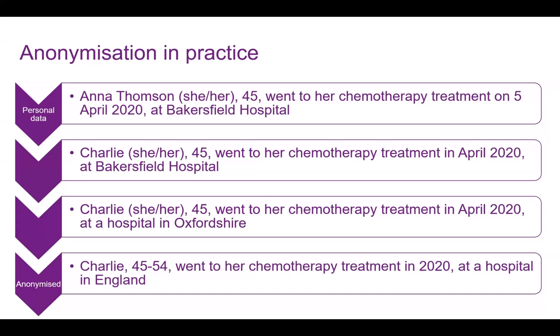You might decide that's an indirect identifier given there is a date for the treatment. The age of the participant — 45 — is still quite young for cancer treatment. Given the place and the date, you might need to change the age as well. Here I've changed it to an age range instead, using the ONS (Office for National Statistics) age category, which allows for relative understanding to national numbers. We will talk about strategies like binning that you can do with some of these variables.